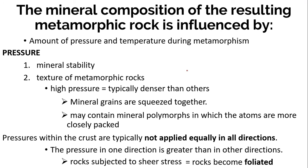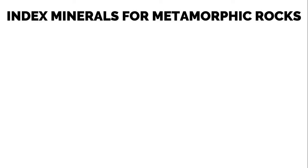When rocks are subjected to shear stress, they become foliated — meaning the minerals within them become aligned. Based on this, metamorphism does not drastically change the composition of the original rock, but changes in the mineral composition of the resulting rock can be useful in determining the degree of metamorphism. To do this we use index minerals, which are used to determine the degree of metamorphism a rock has experienced.